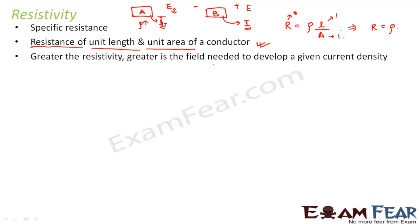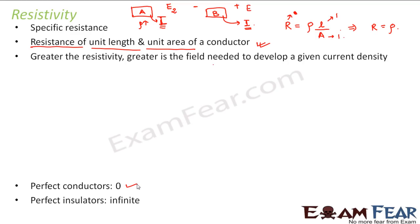For a perfect conductor, resistivity is zero — it conducts everything smoothly with no resistance and no obstacles in the path of electron flow. For perfect insulators, the resistivity is infinite; there are so many obstacles that current cannot flow at all. That is why they are called insulators — they do not allow current to flow. So: perfect conductors have resistivity zero, perfect insulators have resistivity infinite.